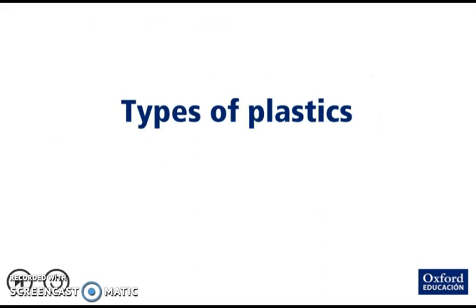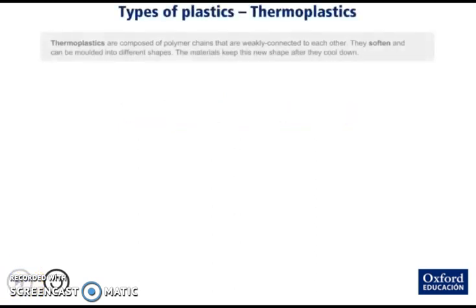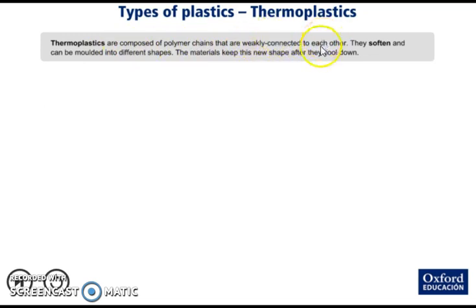Now let's see different types of plastics depending on the internal structure. The first type: thermoplastics. Thermoplastics are composed of polymer chains that are weakly connected to each other. This is a very important property. They soften and can be molded into different shapes, and the material keeps this new shape after it cools down.